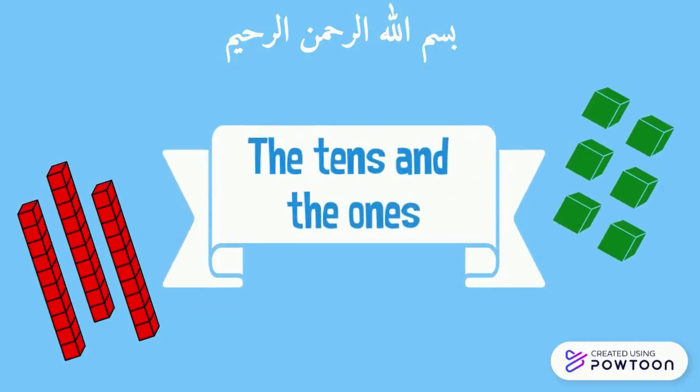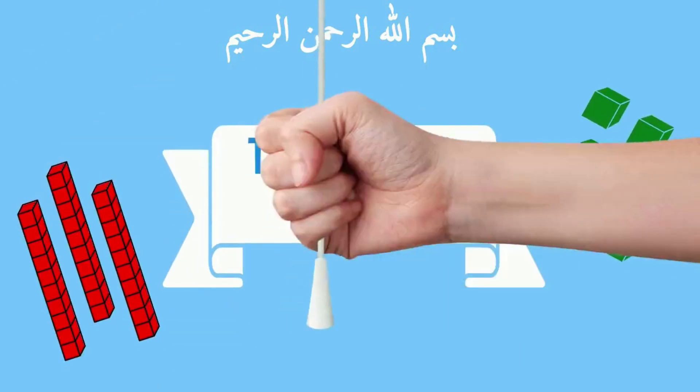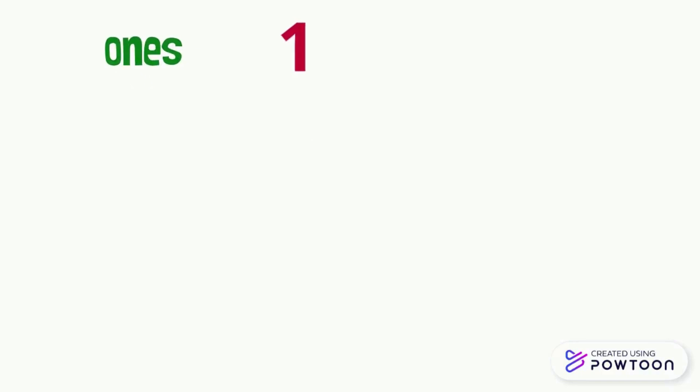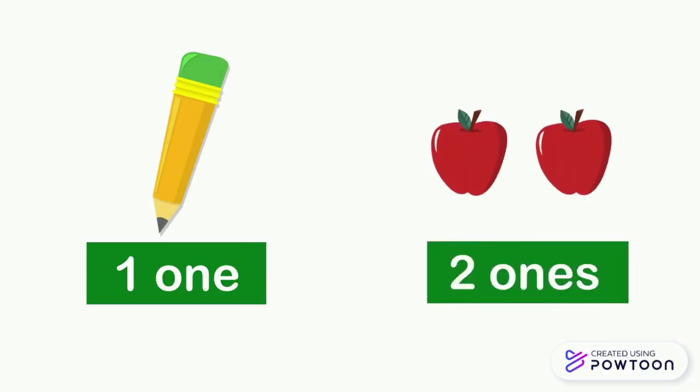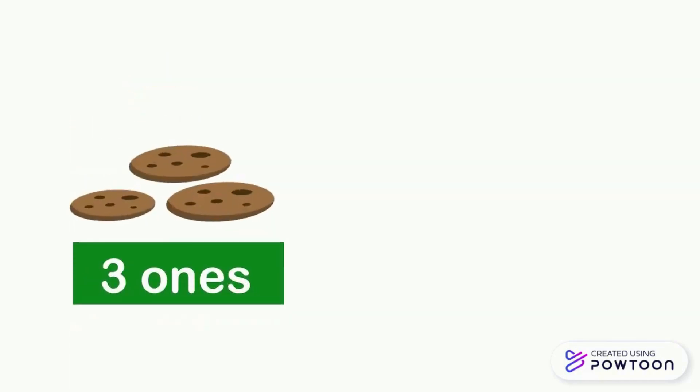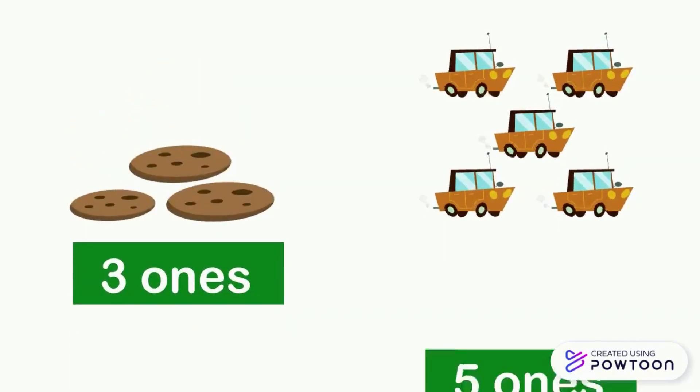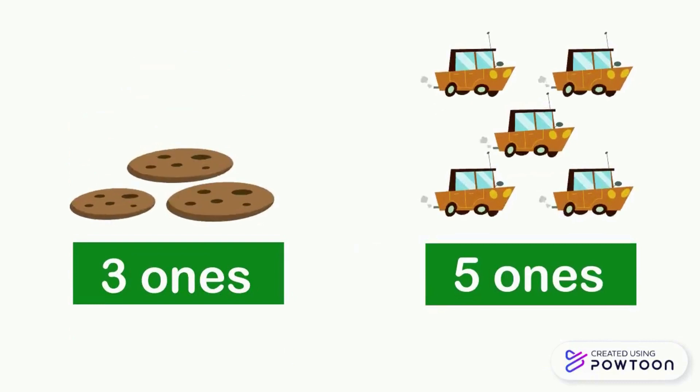Let's talk about ones. One is a single object. Here we have a pencil, so it is one — one one. Here there are two apples, so it is two ones. Here there are three cookies, so it is three ones. Here there are five cars, so it is five ones.